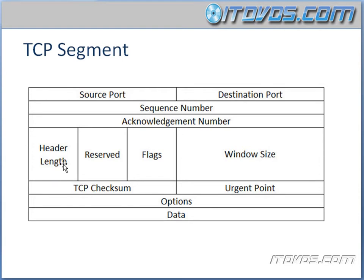Header length specifies how large the header is. Reserved is always set to zero. Flags are used to set up and terminate an actual session. Window size is what we just talked about with windowing, and it's specified in octets, which is also a byte. TCP checksum is a cyclic redundancy check applied to both the header and the data to make sure there was no corruption in the transmission process — this is also very important because it's what makes TCP reliable.